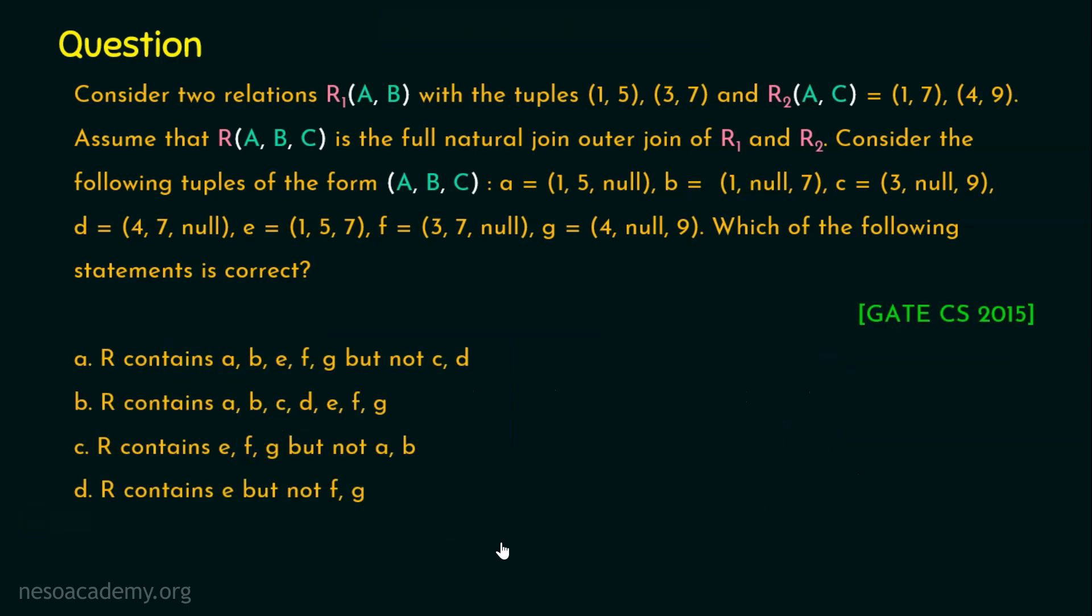Now let's see the actual output for this question. Option C is the right answer because the output relation R contains only E, F, G but not A, B. So this option only is matching, and hence Option C is the right answer. I hope you guys enjoyed this presentation and thank you for watching.